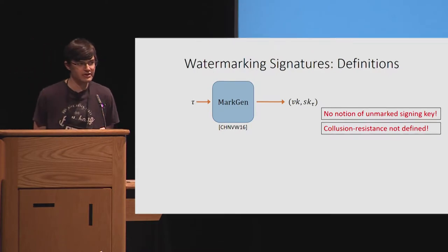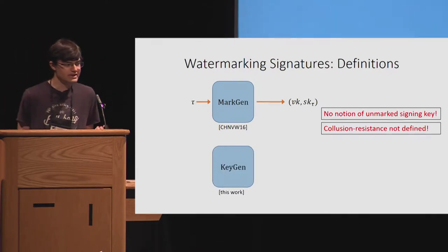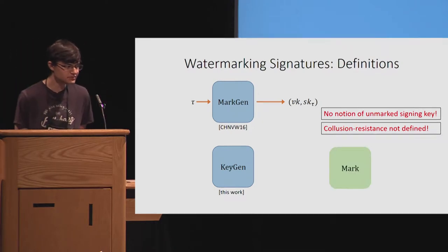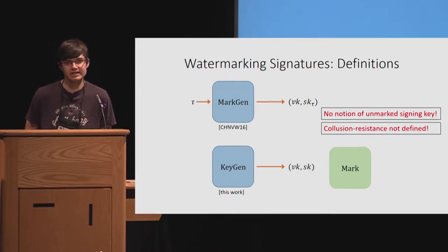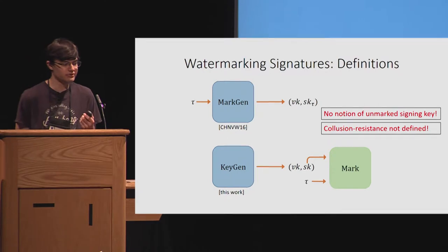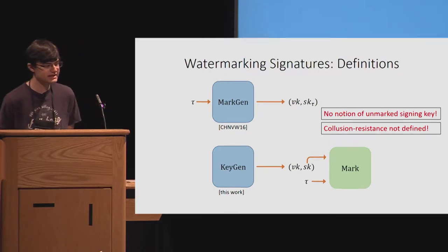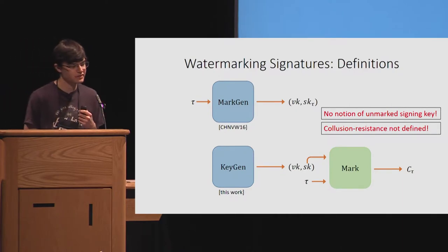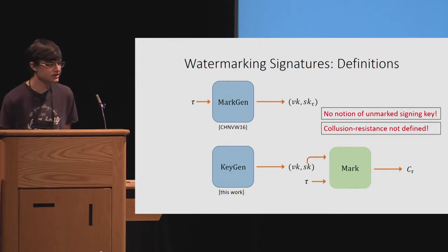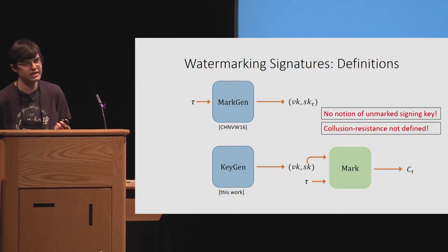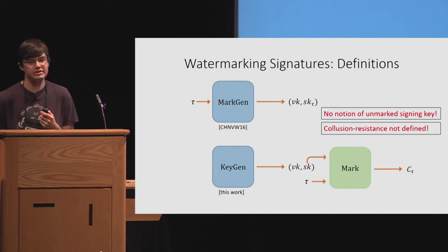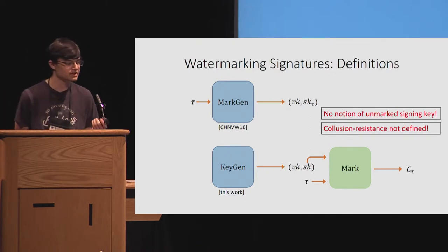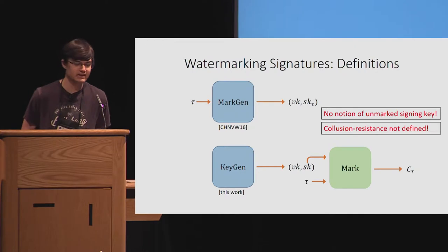This is not that big an issue — it's not very difficult to fix. We simply separate these algorithms: we have a separate keygen algorithm and a mark algorithm. Our keygen algorithm first generates a verification and signing key pair. Then the mark algorithm takes as input the signing key and a tag tau, and outputs a marked circuit C sub tau that implements the marked signing key functionality. In this new formulation, there's an unmarked signing key — the initial signing key output by keygen — and it is easy to generate many marked versions of the same signing key by running the mark algorithm with the same signing key and many different tags.